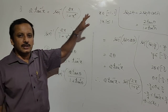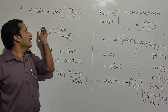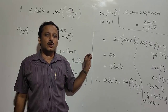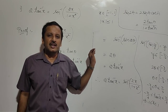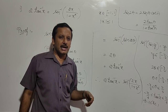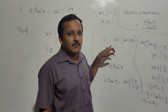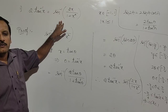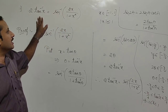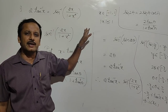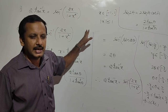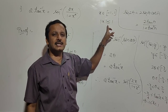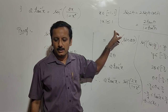You can expect an exam question asking: for what values of x does 2 tan⁻¹(x) = sin⁻¹(2x/(1+x²)) hold? Or: find the values of x such that this equation holds. The answer should be the closed interval [-1, 1], or equivalently |x| ≤ 1.